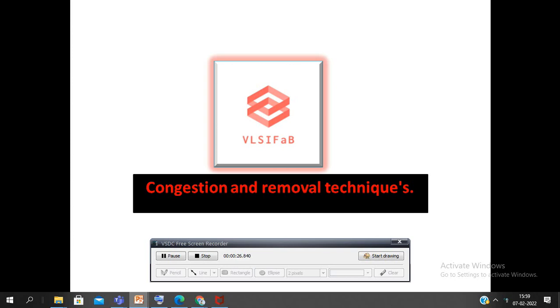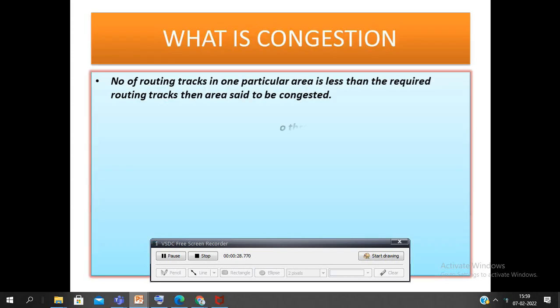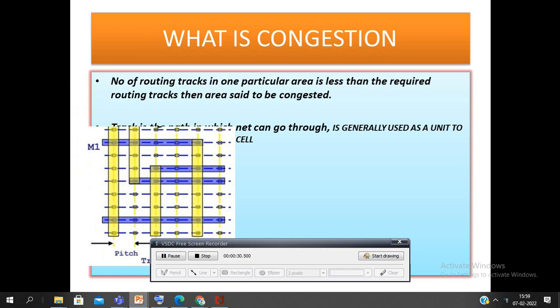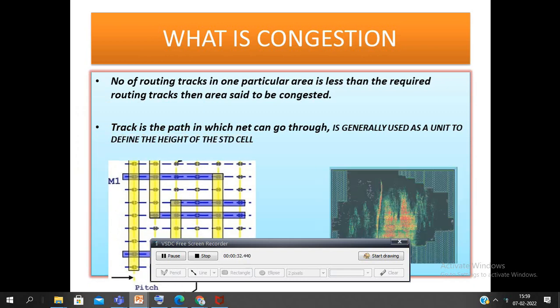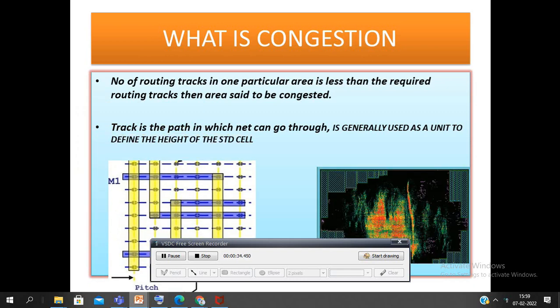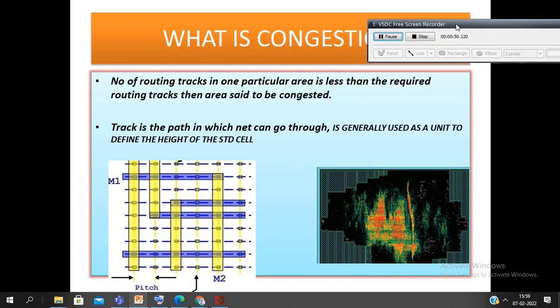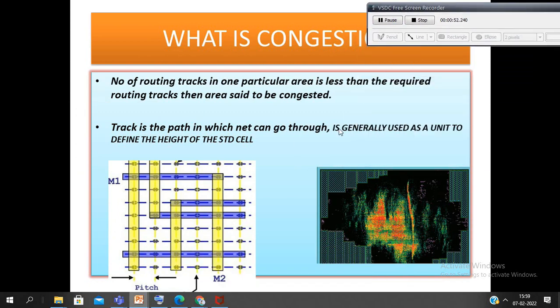So what is congestion? If the number of routing tracks available for routing in a particular area is less than the required routing tracks, then the area is said to be congested. So there will be a limit for the number of nets that can be routed through a particular area. In the diagram we can see that a track is the path in which the net can go through, and it is generally used to define the height of the standard cells.